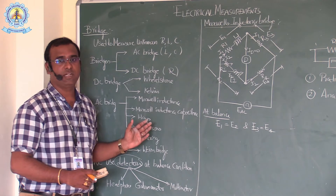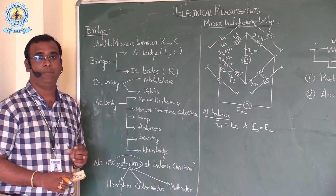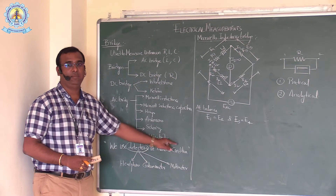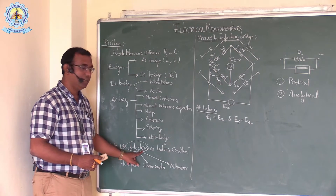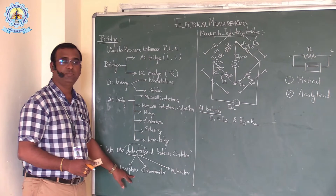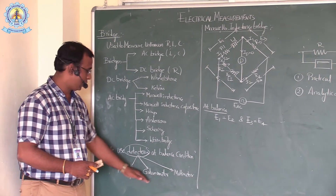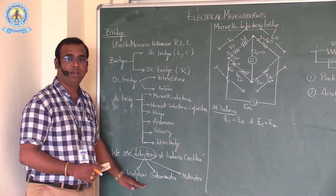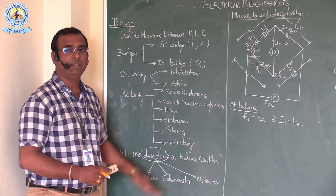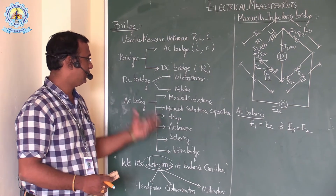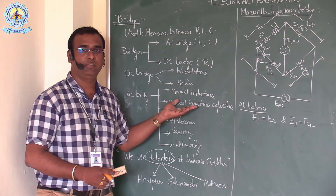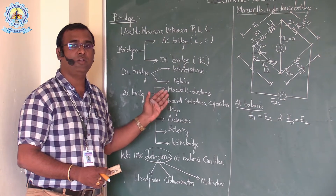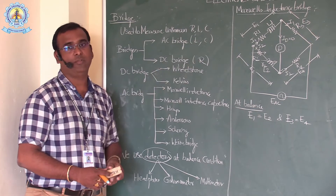In bridge networks, we will come across a condition called the balanced condition. We use detectors to detect that balanced condition. For detection, we use three types of instruments: a headphone, a galvanometer, or a multimeter — all three are used to detect the balanced condition. Let us now discuss Maxwell's inductance bridge, which is mainly used to measure the unknown value of inductance in terms of known values.